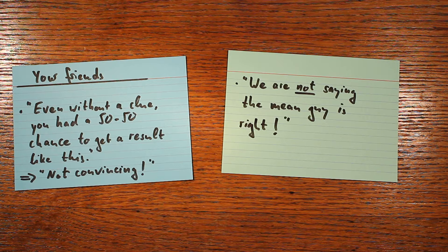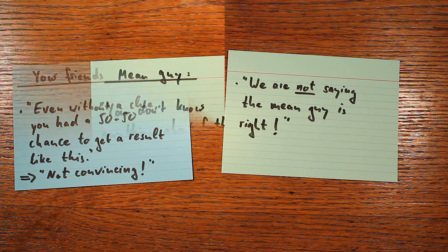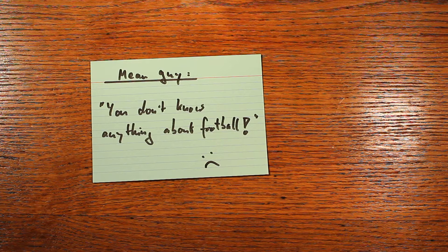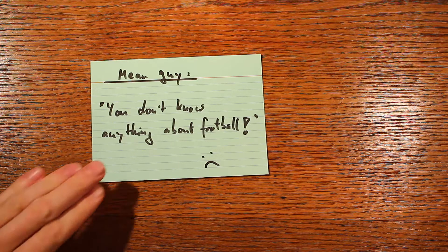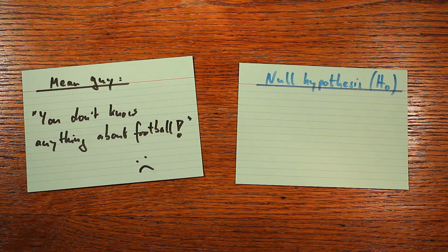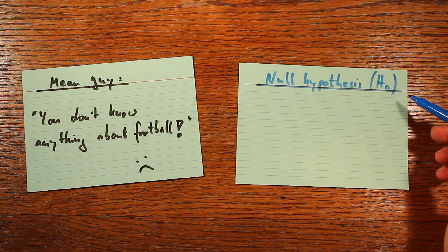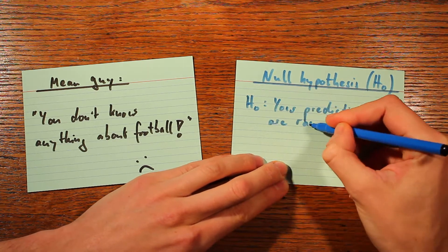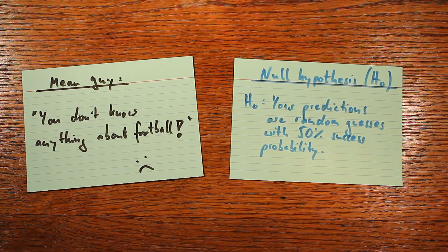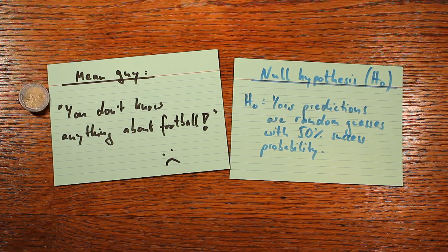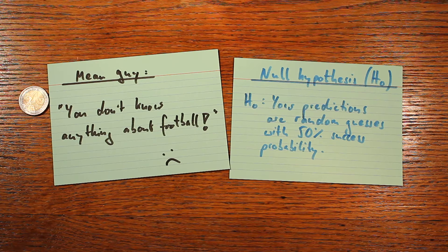This is actually surprisingly similar to what a statistician would say. The mean guy's statement that you don't have any clue about football is what a statistician would call a null hypothesis, often abbreviated as H0. In this case it would be that your predictions are random events with a 50% success probability — meaning your predictions are as bad as tossing a coin. And obviously that's what you'd like to disprove: you want to show that your predictions are more accurate than just random coin flips. In statistics, the null hypothesis is always the kind of mean guy's statement which you'd like to prove wrong.